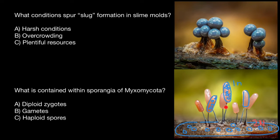Spores are produced through the process of meiosis, so spores are haploid. Hence our answer is variant C: in the sporangia of the myxomycota, we can find haploid spores.